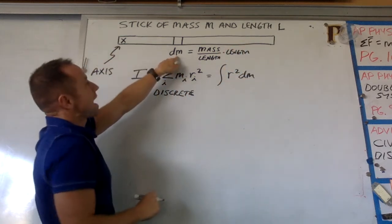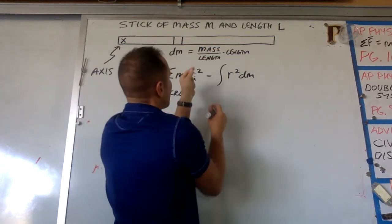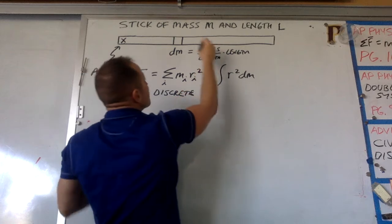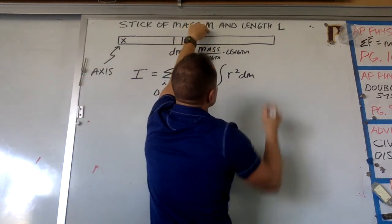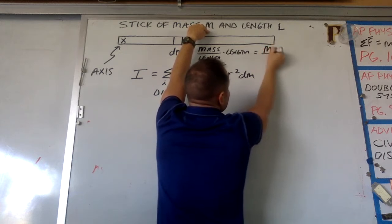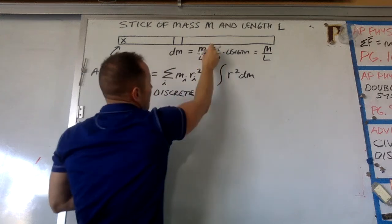So to find how much mass is in this little piece, we need to know its mass per length. And then we need to know how long it is. Well, the mass per length of this thing, we're kind of giving it because the whole stick is mass capital M and the whole stick is length L. So the mass per length is just M over L.